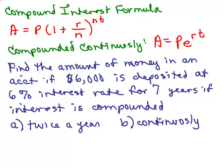Here are the two formulas again, and here's a problem for you to try. Find the amount of money in an account if $6,000 is deposited at 6% interest rate for seven years, if interest is compounded. First, let's do it for twice a year, and then we'll do it for continuously. So, put the video on pause, and try each of those.